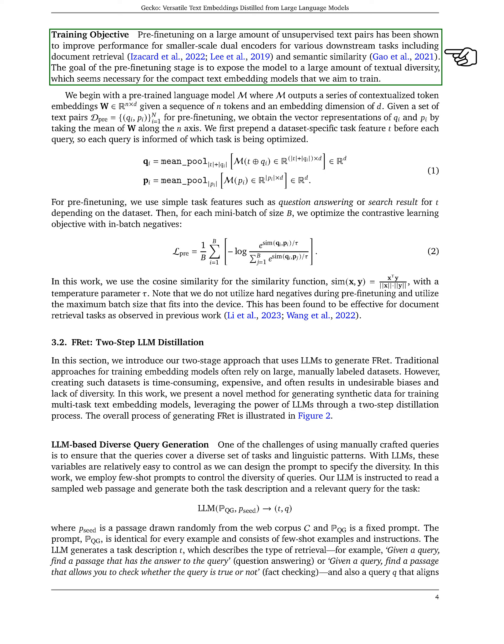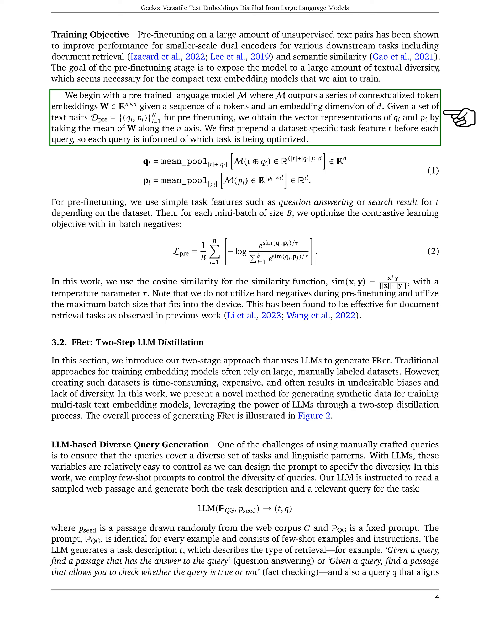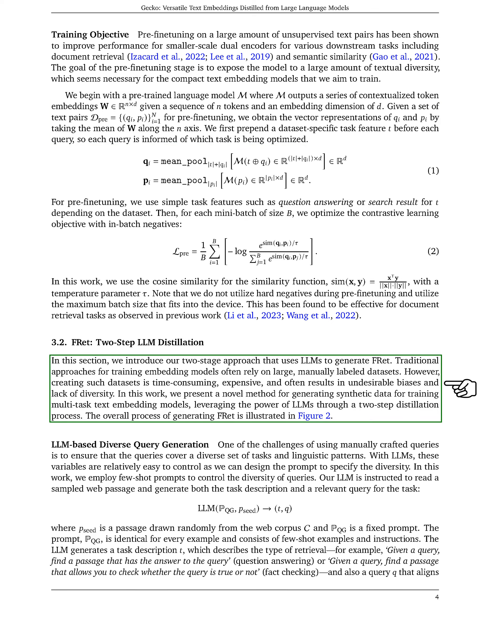The aim is to expose the model to diverse textual data to train compact text embedding models effectively. During pre-fine-tuning, we use a pre-trained language model to generate contextualized token embeddings for text pairs. We optimize a contrastive learning objective with in-batch negatives for each mini-batch, and prepend a dataset-specific task feature before each query. For generating FRET, we introduce a two-stage approach using LLMs to create diverse queries.